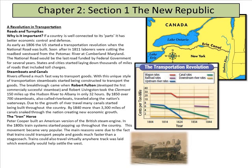The Iron Horse: Peter Cooper built the American version of the British steam engine — applying steam heat to get power, whether on water or on land. In the 1800s, train systems started popping up throughout the country. The main reasons were that trains could transport people and goods much faster than a stagecoach, and trains could travel virtually anywhere track was laid, which eventually would help settle the West.